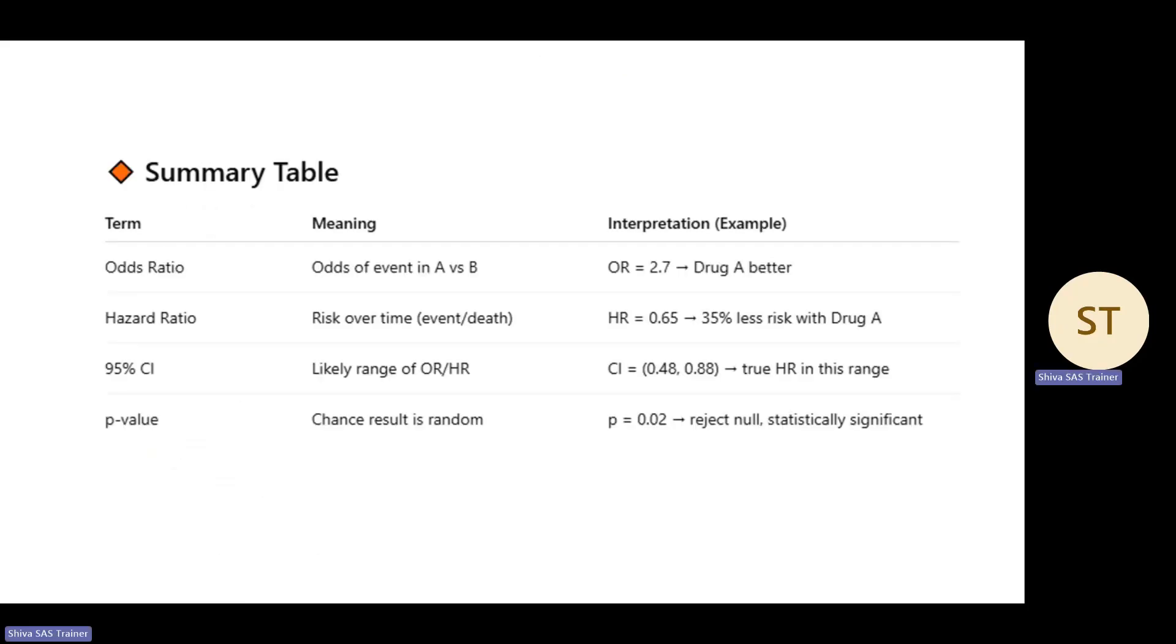Here's the summary table: odds ratio compares odds of event A versus B, hazard ratio is risk over time, CI is the likely range of odds or HR, and p-value tells if the result is random. Thanks for watching this video. If you want more interesting videos, please subscribe to my YouTube channel.